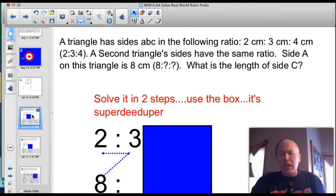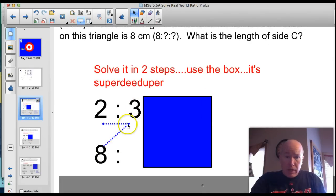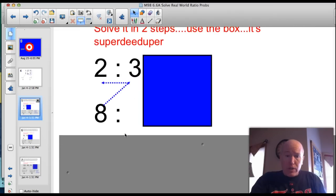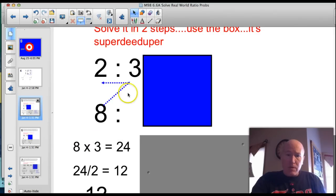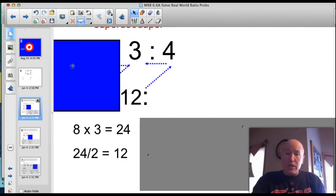A triangle has sides A, B, C in the following ratio: 2 centimeters to 3 centimeters to 4 centimeters or 2 to 3 to 4. A second triangle's sides have the same ratio. Side A on this triangle is 8 centimeters. What is the length of side C? We just need to know one, but we're going to have to find them all. Solve it in two steps. Use the box like I did. We're going to multiply diagonally. 8 times 3, which would be 24. And then we're going to divide by 2, which would be 12. 8 times 3 is 24. And 24 divided by 2 is 12. So we put 12 up here.